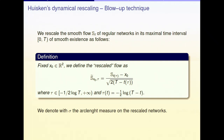For curvature flows or mean curvature flows in general, the way to classify the limit flows is by means of Huisken's monotonicity formula, which also holds for the network flow. What I am using instead is the way of rescaling things introduced by Huisken again — what we call dynamical rescaling of a flow.